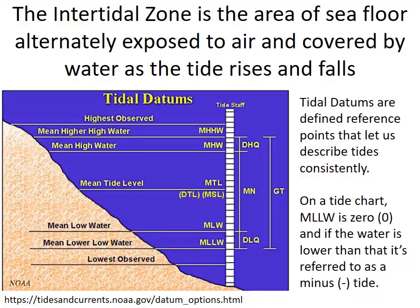The intertidal zone is the area of the seafloor that is sometimes covered by the ocean during high tides and is other times exposed to the air during the low tides. We describe and measure different locations within the intertidal zone with what we call tidal datums, which are reference points based on the average, maximum, and minimum levels that we ever see the tide getting to at a particular spot.